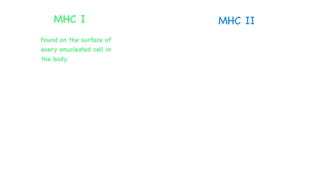There are two types of MHC molecules: MHC class 1 and MHC class 2. MHC 1 molecules are found on the surface of every nucleated cell in the body. This is why they are not found on red blood cells, because red blood cells do not have a nucleus. MHC 1 molecules present their antigens to cytotoxic T cells, also referred to as CD8 positive T cells.